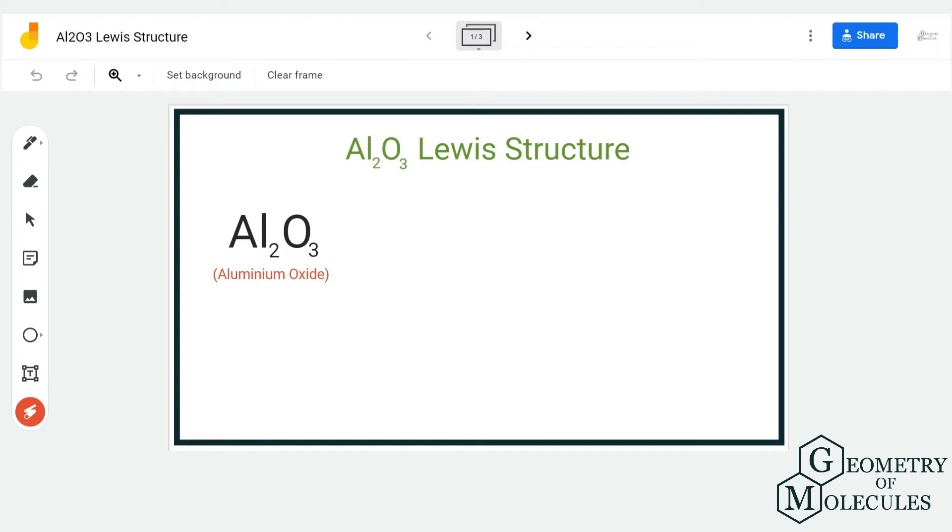Hi guys, today in this video we are going to look at the Lewis structure for Al2O3, which is also known as aluminum oxide. This compound is an ionic compound because it is made up of one metal, aluminum, and an oxide group which is non-metal.